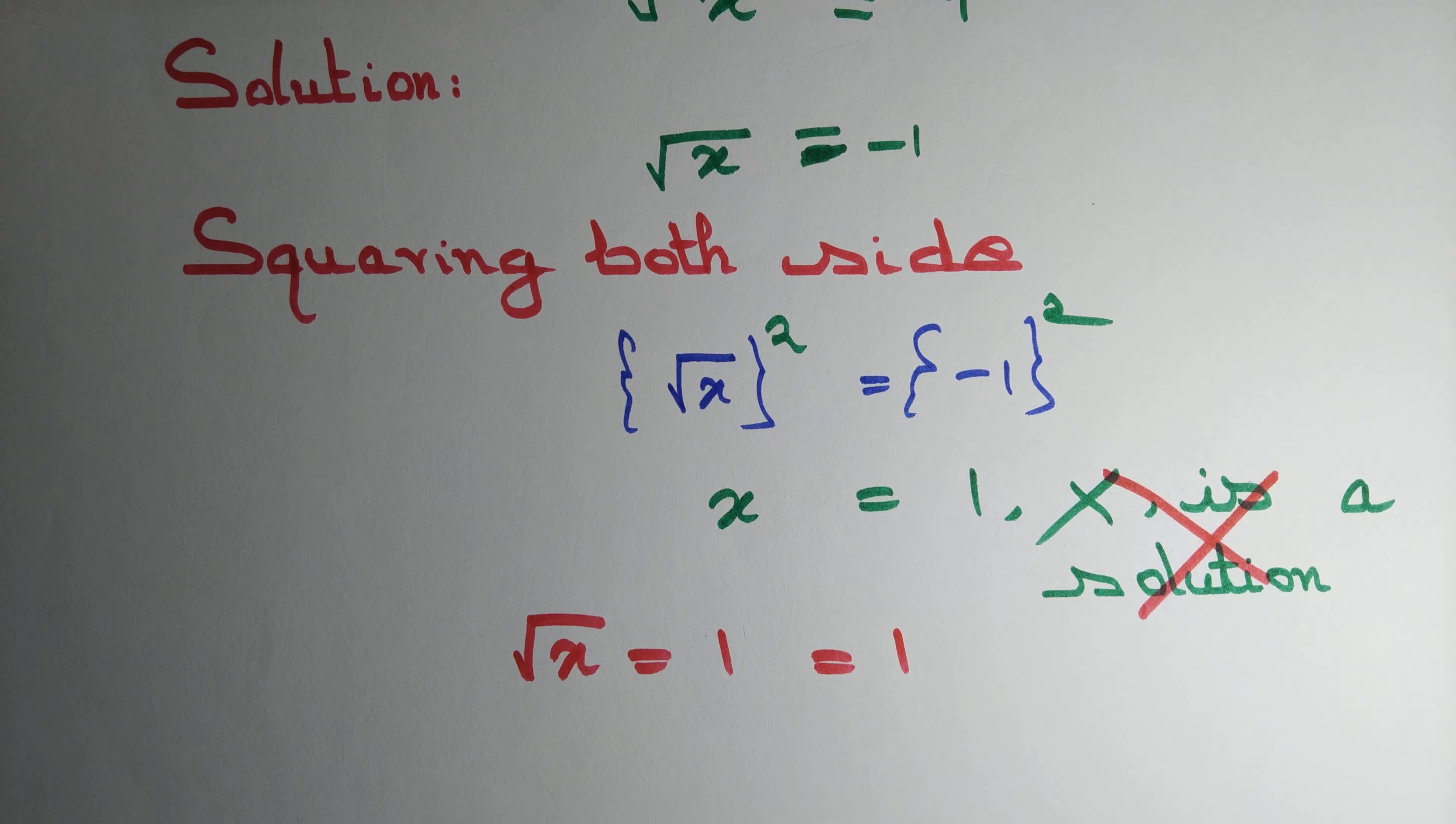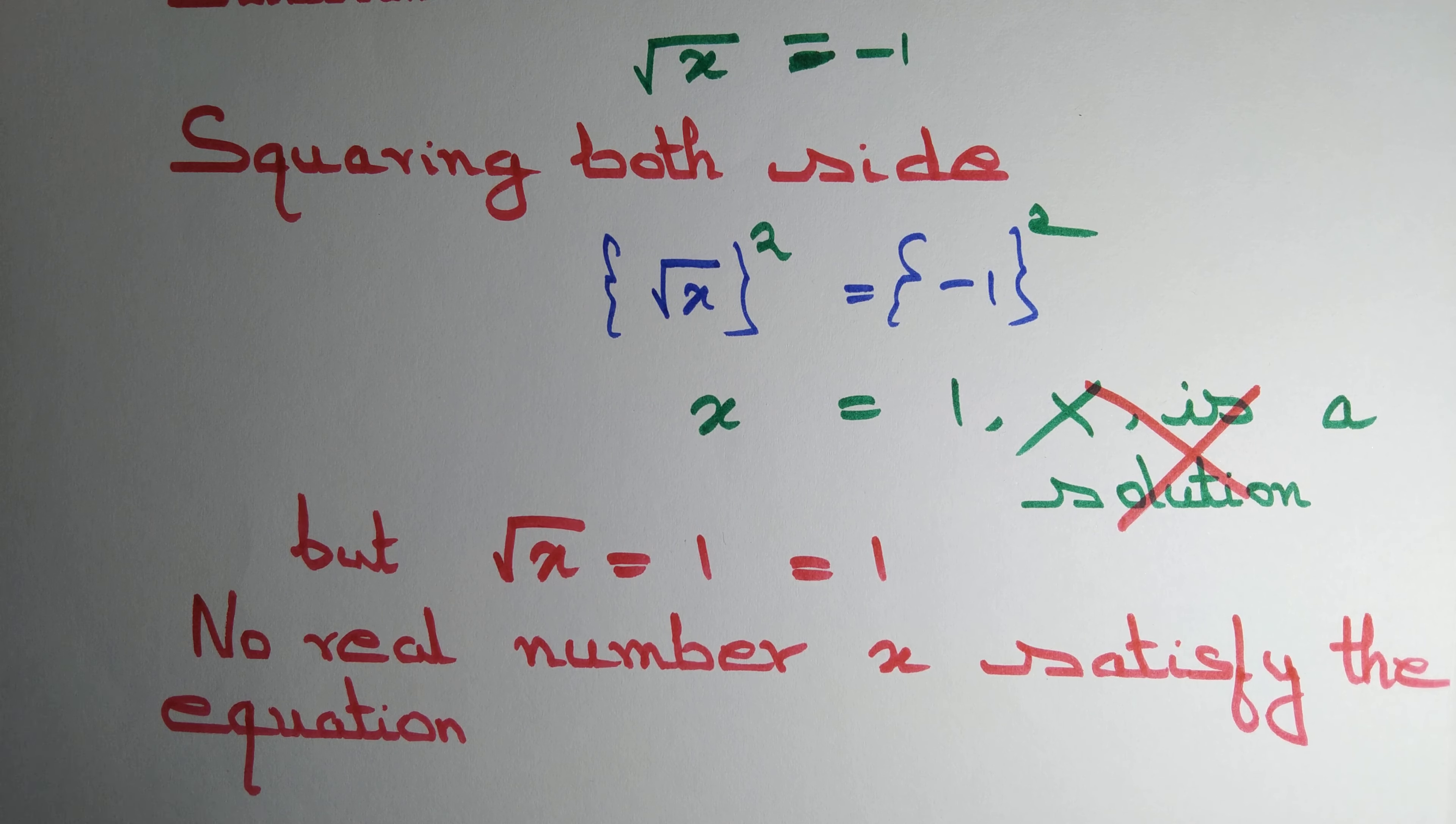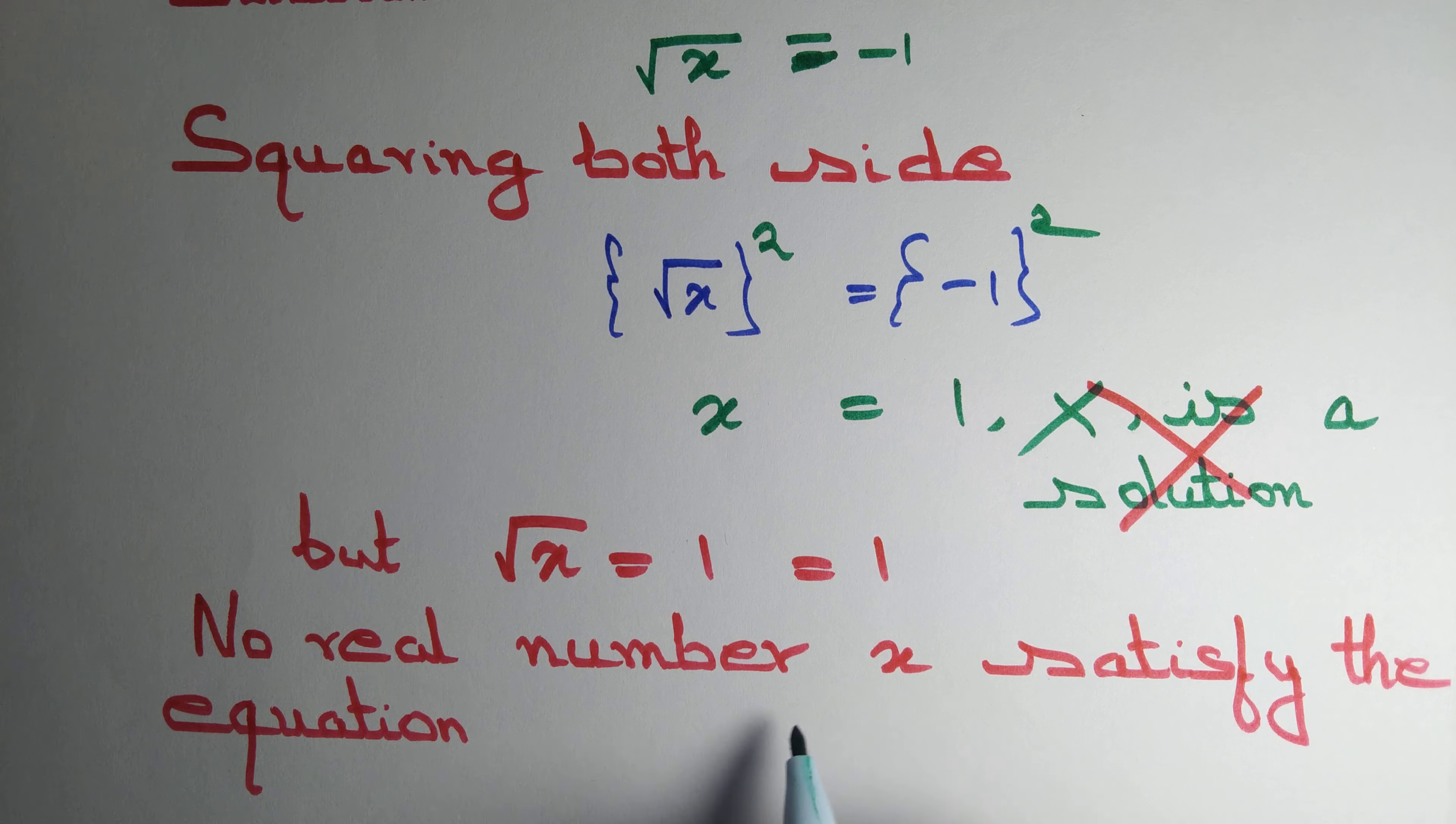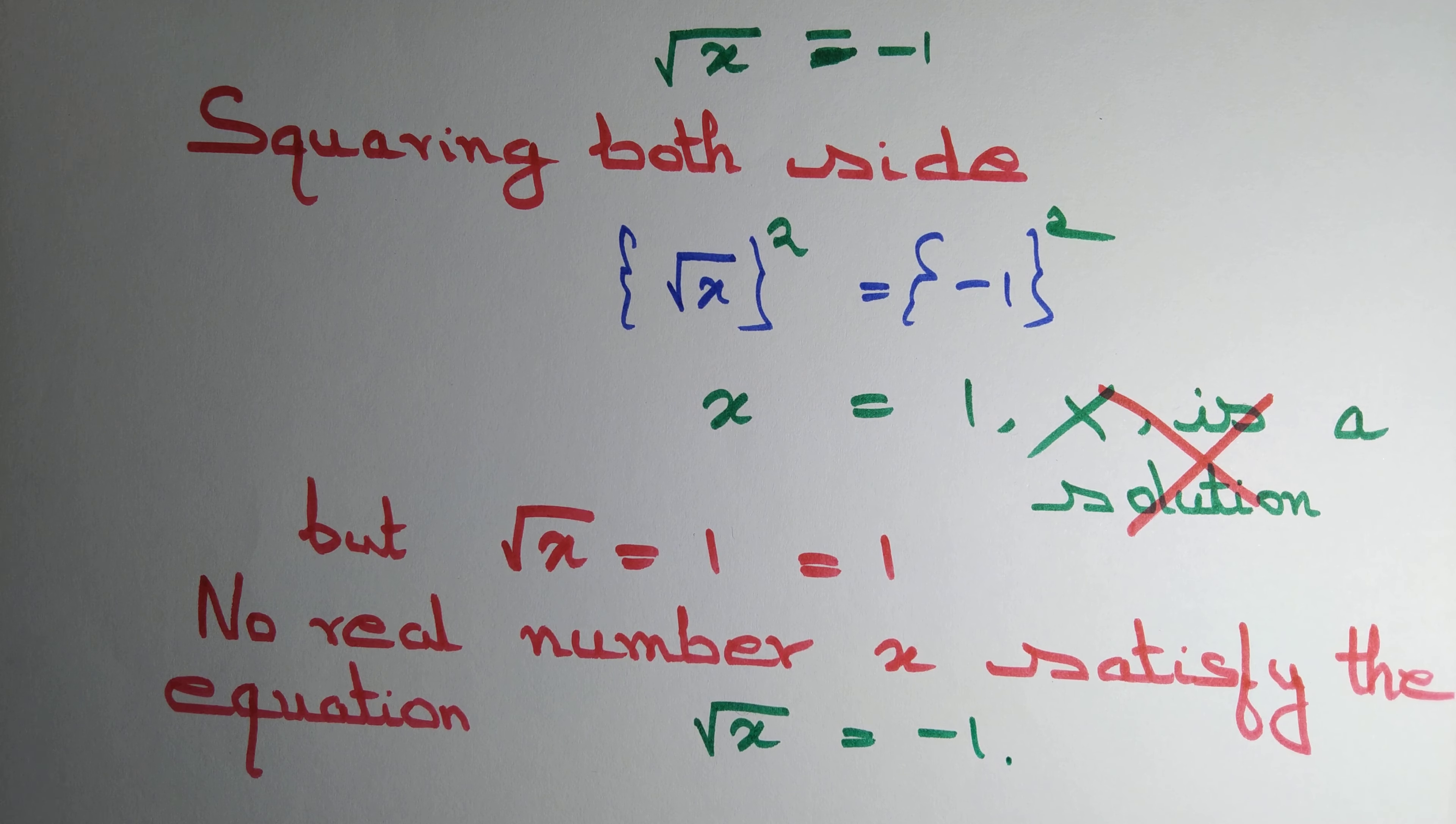So there is no real number x that satisfies the equation. The correct answer is: no real number x satisfies the equation √x = -1. This equation has no real solution.